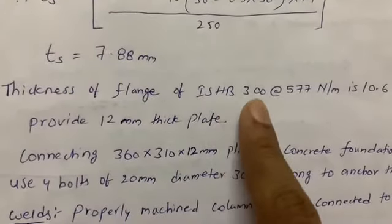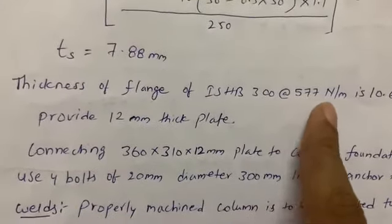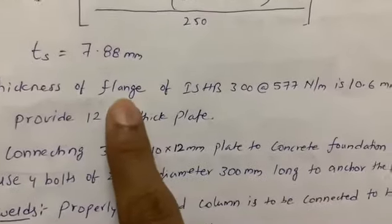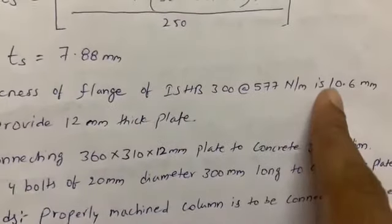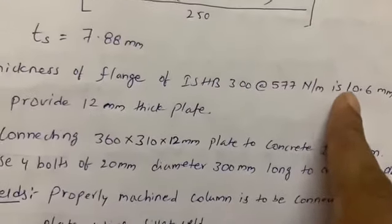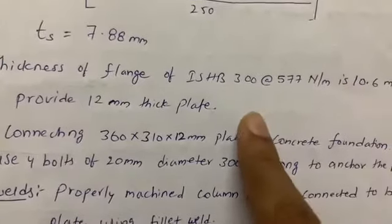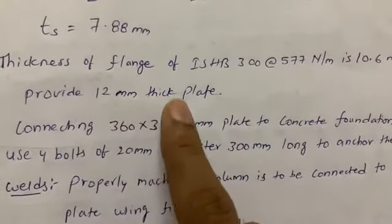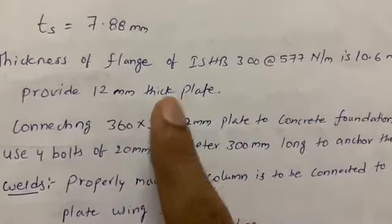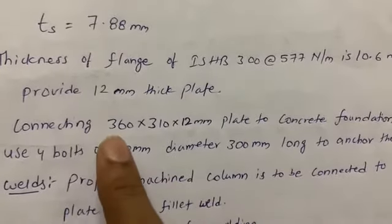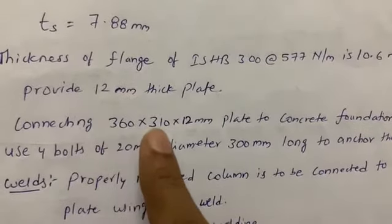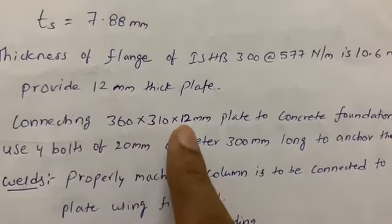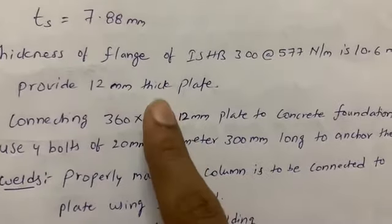The flange thickness of ISHB 300 is 10.6 mm, available in the steel tables book. I am providing a 12 mm thick plate — that is, a 360 × 310 plate of 12 mm thickness — connecting it to the concrete foundation.